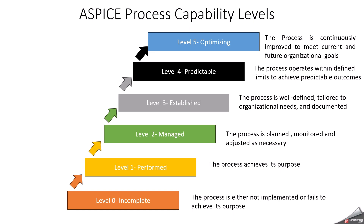ASPICE defines six process capability levels, which are used to evaluate the maturity of processes and the effectiveness of an organization's approach to process management. These levels are designed to help organizations continuously improve their processes to meet industry standards and regulatory requirements. Now we can discuss about each and every level.